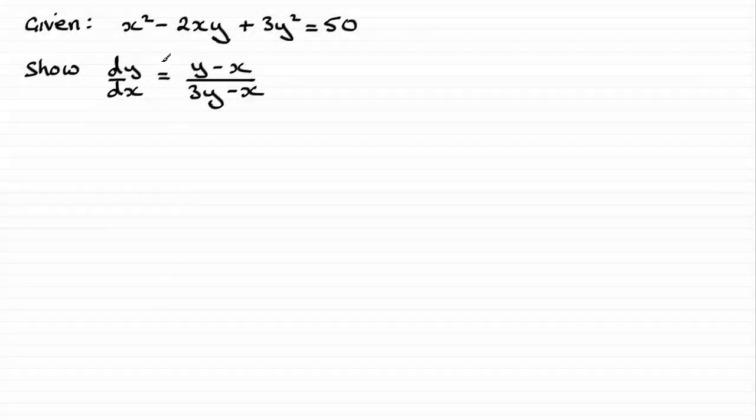So for this part of the question we're given the equation of this curve, x squared minus 2xy plus 3y squared equals 50, and we've got to show that the gradient function dy/dx is equal to y minus x all over 3y minus x.